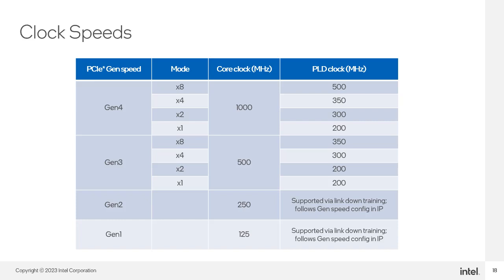This slide shows how the core clock and PLD clocks can change based on the link speed. The PLD clock is provided by the hard IP to the FPGA fabric, and its speed varies based on lane width and link speed. Since GEN2 and GEN1 are not supported natively and only through link downtraining, the PLD clock during downtraining will continue to follow the original configured speed of the hard IP. So if you configure the IP for GEN4 and it downtrains to GEN2, the PLD clock frequency will continue at the speeds for GEN4. The same applies if you configure the hard IP for GEN3 operation.